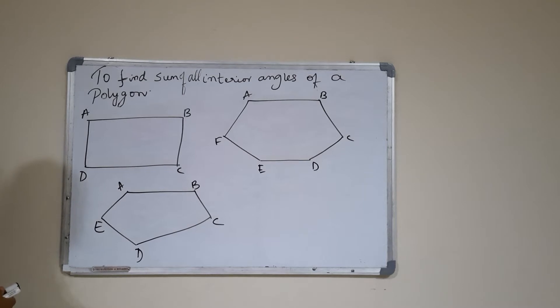We all know that a polygon is a simple closed figure bounded by straight line segments, and we name polygons based on the number of sides they contain: 3 sided is a triangle, 4 sided is a rectangle or square, 5 sided is a pentagon, 6 sided is a hexagon, and so on. Today I am going to find the sum of all interior angles of these polygons.